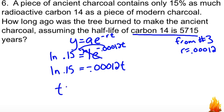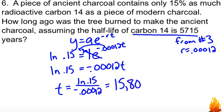So to find T, all we have to do is divide the natural log of 0.15 by negative 0.00012. And when we plug that into our calculator, we find that this particular piece of charcoal we can estimate as 15,809 years old.